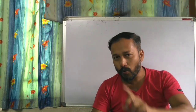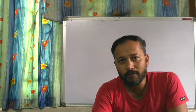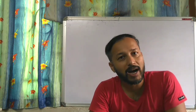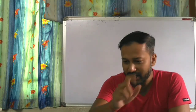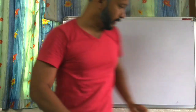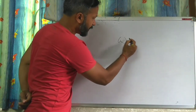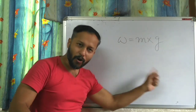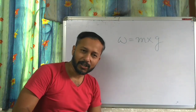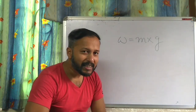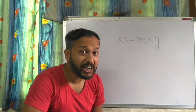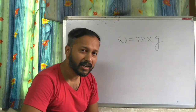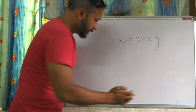Now I will tell you an equation that describes the relationship between mass and weight. The relation is: Weight = Mass × Gravity. Here, g means acceleration due to gravity — the gravity of that particular planet. So W = mg.